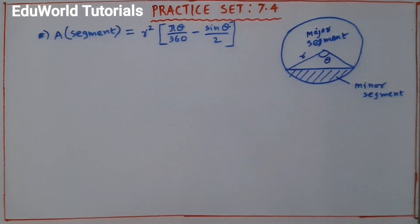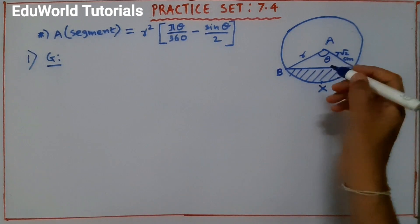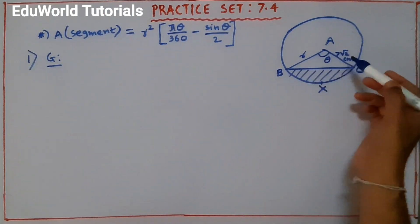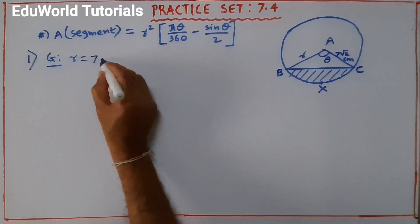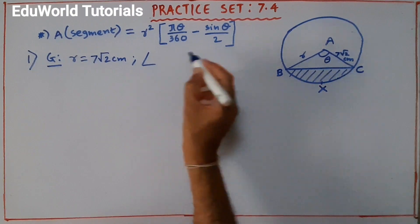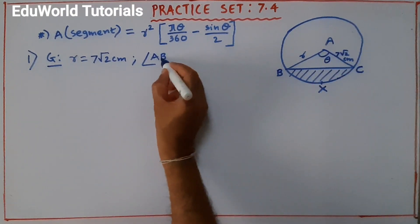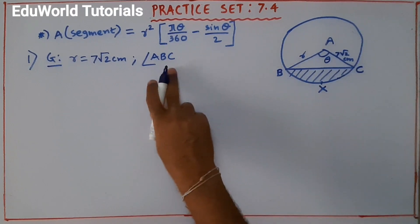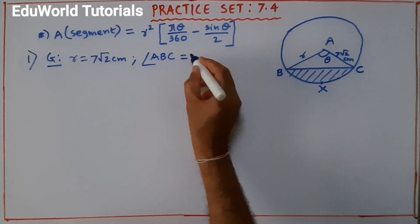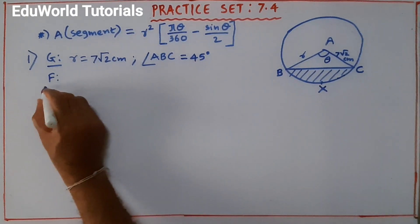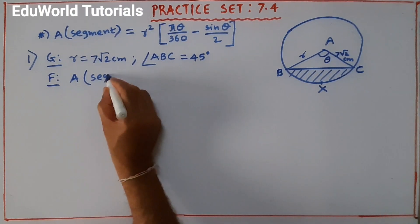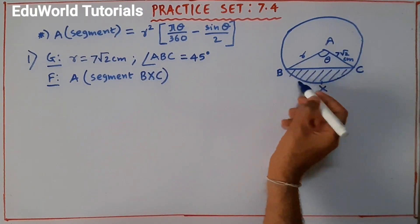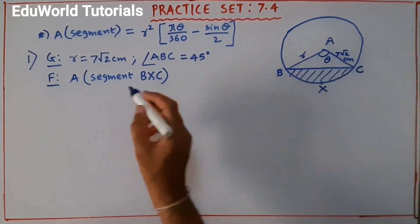I am reading the first sum of practice set 7.4. It is said that A is the center of the circle and radius AC or AB is 7√2 centimeter. So radius R = 7√2 cm. Also, they have said angle ABC — there is some confusion in the textbook, it may be angle ABC or angle BAC — but as per the textbook, we take angle ABC = 45°. We have to find area of segment BXC.